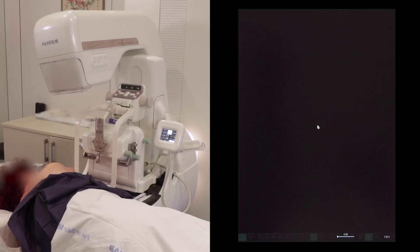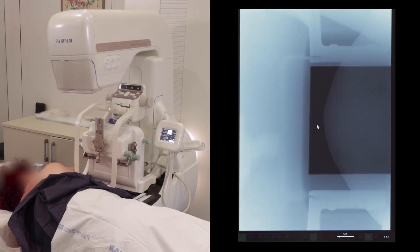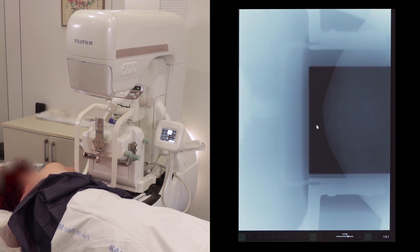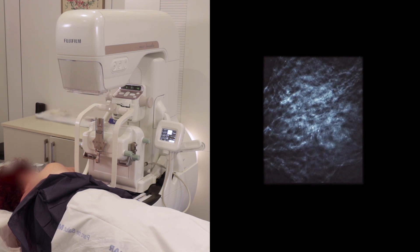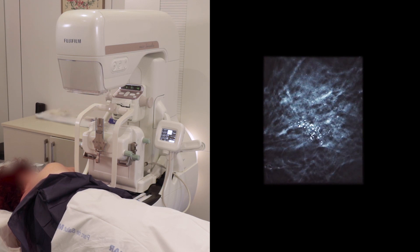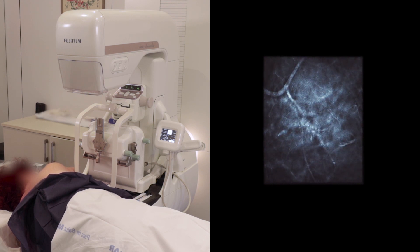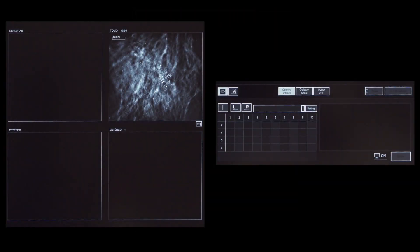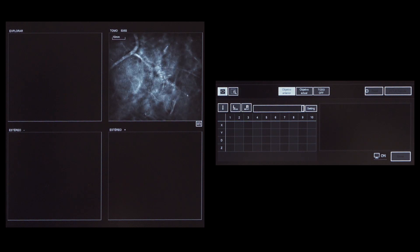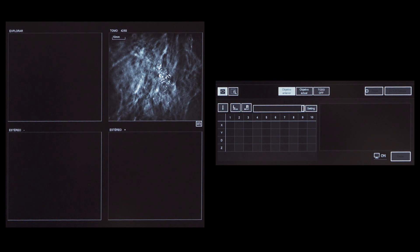Acquire a TOMO biopsy sequence. Raw projections are displayed, followed by the TOMO images. Scroll through the TOMO images to select the plane where the target is displayed. Select the target.